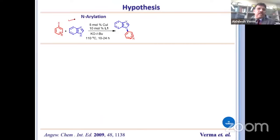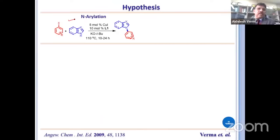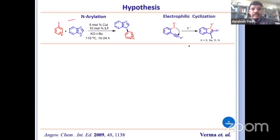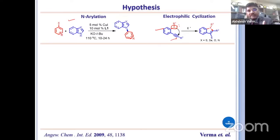This is well-known chemistry of arylation of any heterocycle — when you take any heterocycle and arylate with copper and palladium, you can do CN bond coupling, also known as Buchwald-Hartwig coupling. Another is electrophilic cyclization, well-established by Yamamoto and Leroy. If you have lone pair at X, once you can activate this alkyne — which can be activated easily by a metal or by electrophile — this can easily cyclize, giving a five- or six-membered ring where X may be sulfur, selenium, oxygen, or nitrogen.